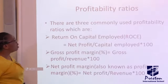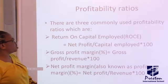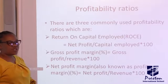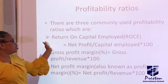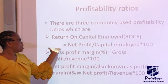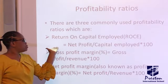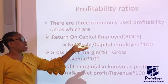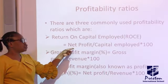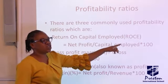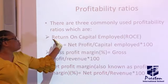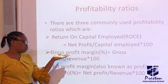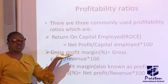We move to profitability ratios. There are three commonly used profitability ratios. The first is Return on Capital Employed (ROCE). You arrive at ROCE by dividing net profit by capital employed, then multiplying by 100. Whatever you arrive at gives you the return on capital employed.